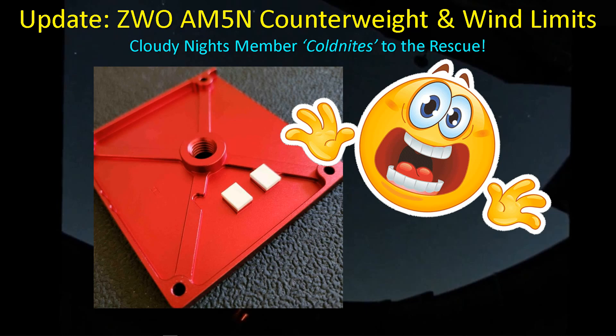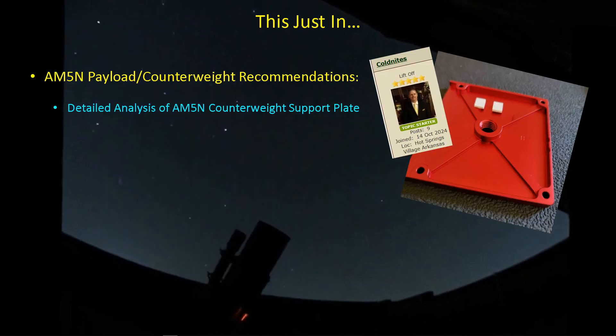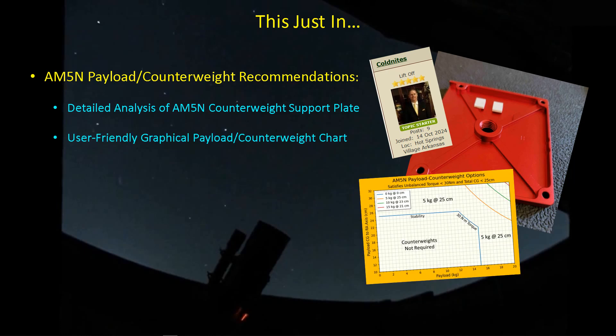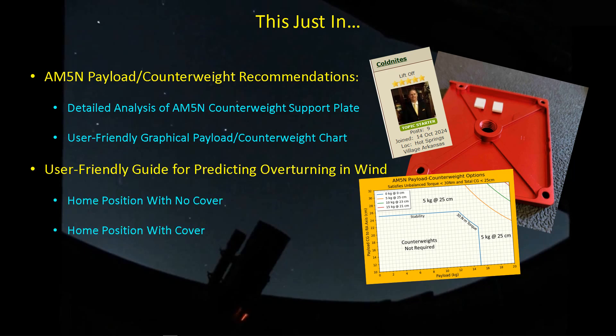Now I'm worried if the AM5N can even support the counterweight ZWO says we can put on it. Cloudy Nights member posted the information recently, and I'll be taking all that information into account, revising my structural model, and then coming up with a prediction of what that plate can hold in terms of counterweights. Can we actually go above 5 kilograms? And then we'll go back and take a look at that graphical presentation I showed in the last video about the combinations of payload CG location and the payload weight and when to use counterweights, and finally, just how much wind will it take to turn over the telescope? I'm going to provide a simple equation that we can all use for any mount for any payload and just plug it in, and then you can determine what the predicted wind speed is to turn it over.